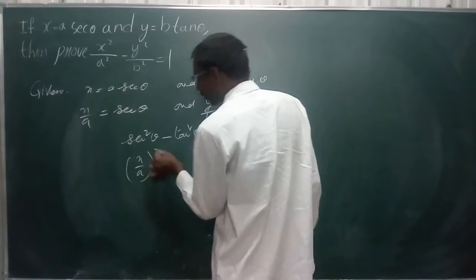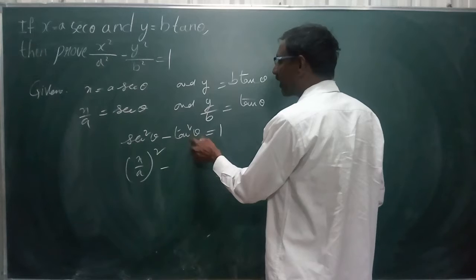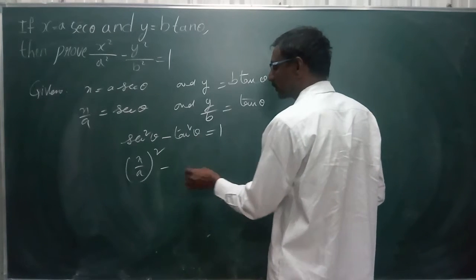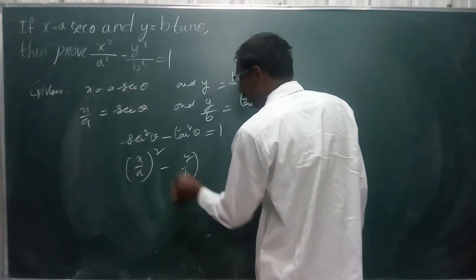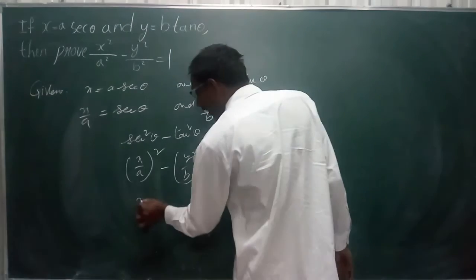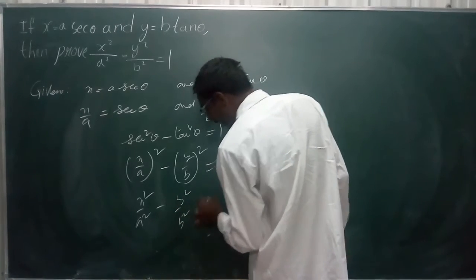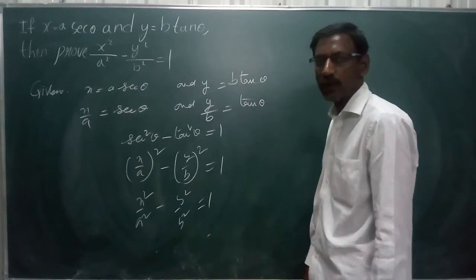x by a square minus tan theta value is how much? y by b all square. That is equal to 1. Therefore, x square by a square minus y square by b square is equal to 1.